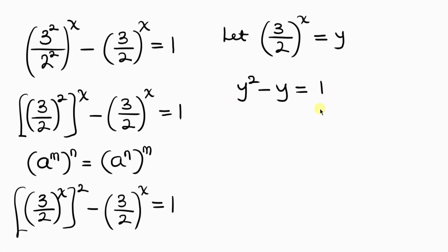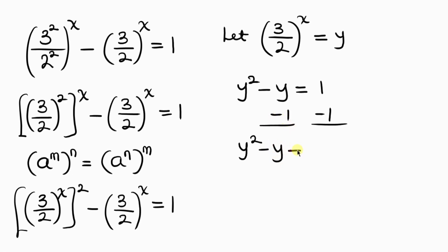Our next step is to move 1 to the left-hand side by subtracting 1 from both sides. This becomes y squared minus y minus 1 equals 0. We have a quadratic equation that we cannot factorize.